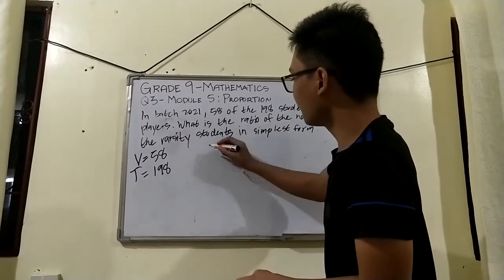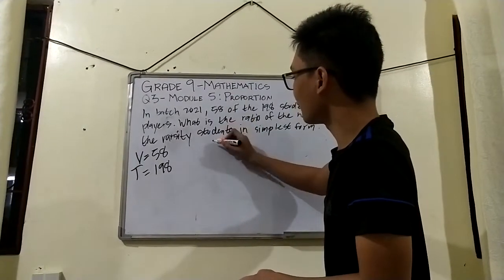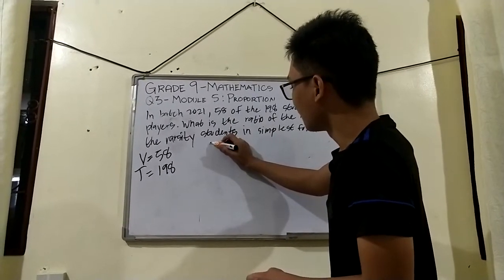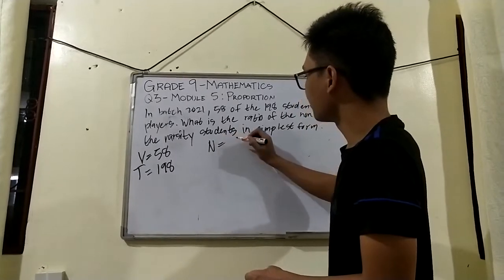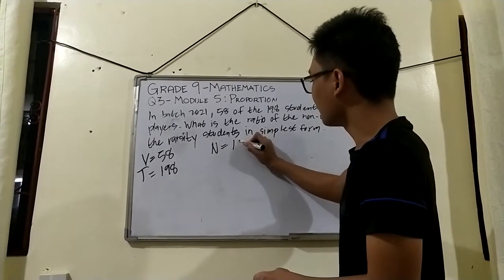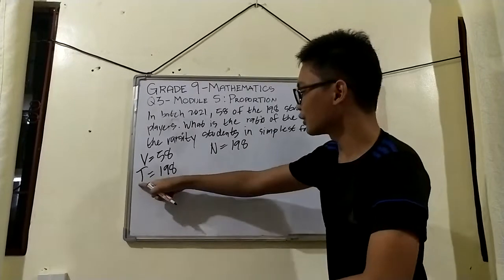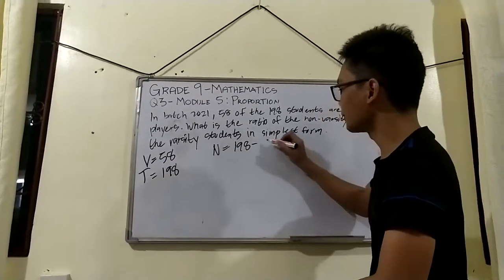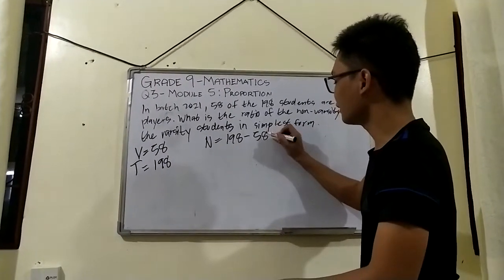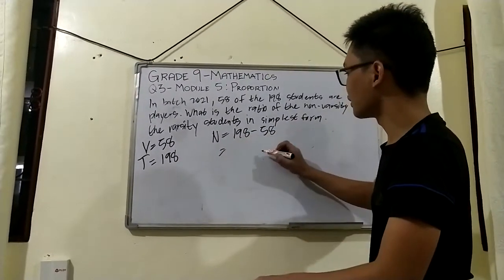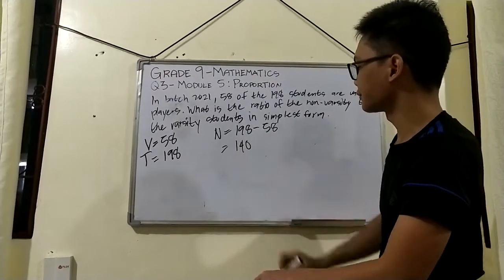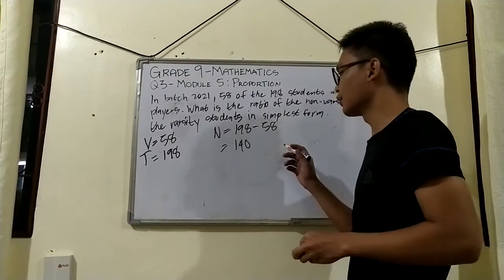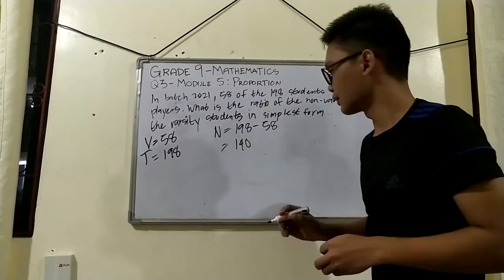To find the number of non-varsity students, we will compute: non-varsity equals the total number of students, which is 198, minus the total number of varsity players, which is 58. So 198 minus 58 is 140. So 140 is our number of non-varsity students.